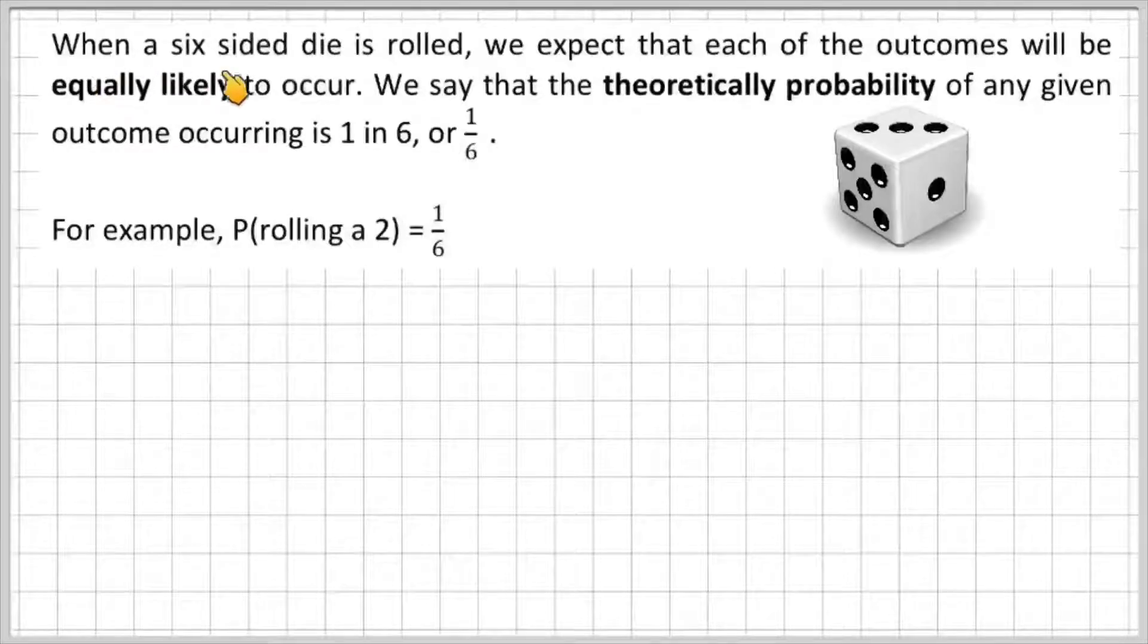Okay, so when a six-sided die is rolled, we expect that each of the outcomes will be equally likely to occur. We say that the theoretical probability of any given outcome occurring is 1 in 6, or 1 over 6.